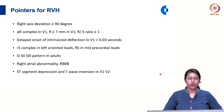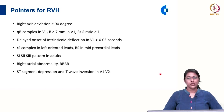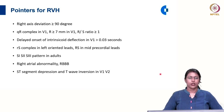We will also see a small r deep S complex in left-oriented leads and an equiphasic RS complex in mid precordial leads. In adults, an S1 S2 S3 pattern — a deep S seen in leads 1, 2, and 3 — is also suggestive of RVH. Presence of right atrial abnormality or right bundle branch block may also be seen. Similar to LVH, ST segment depression and T wave inversion in right precordial leads V1 and V2 may be present.